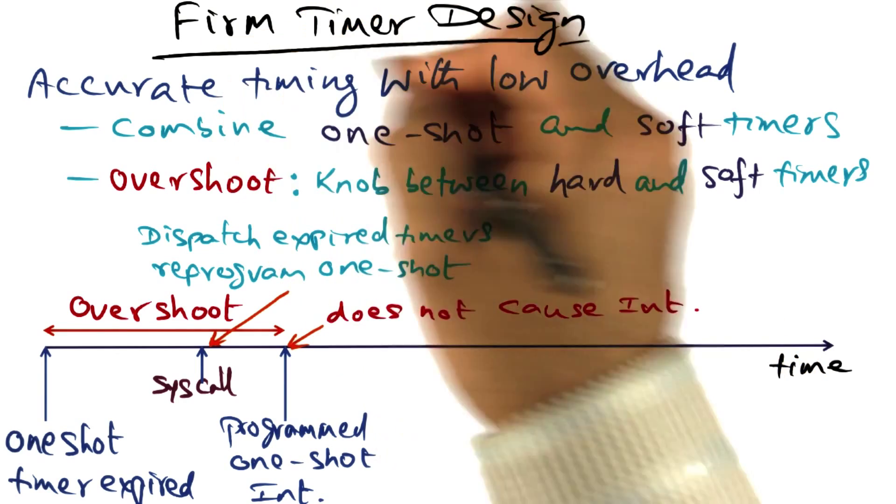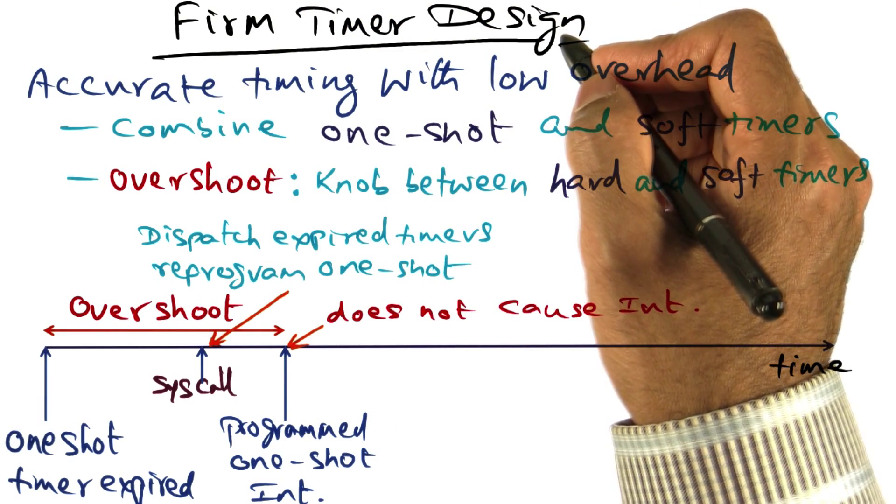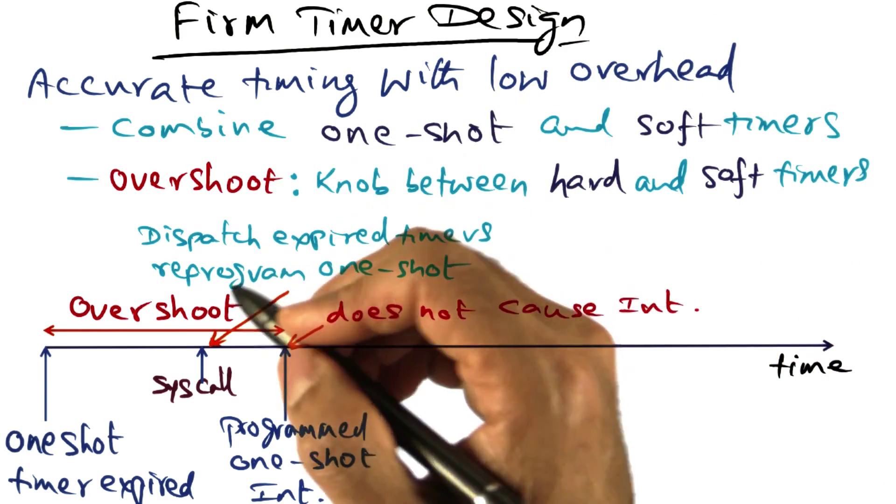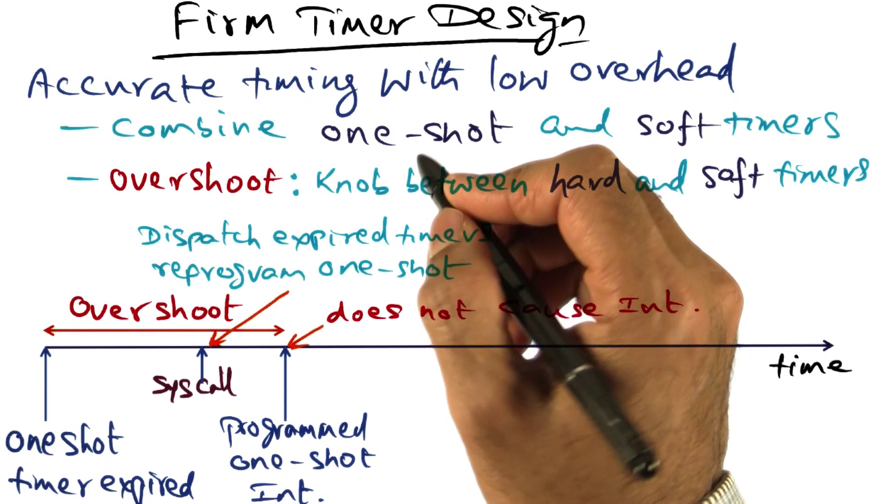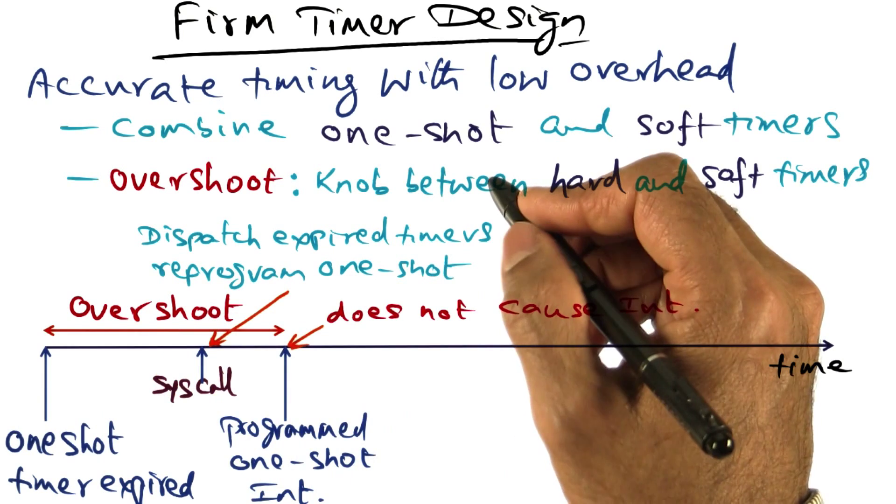So you can see that the firm timer design combines the good points of both the one shot timer as well as the soft timer. It is giving us the accuracy that we want from the one shot timer.